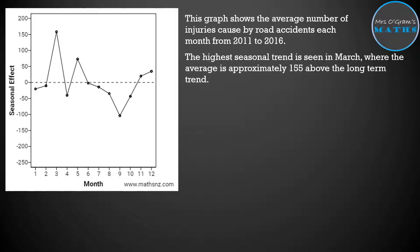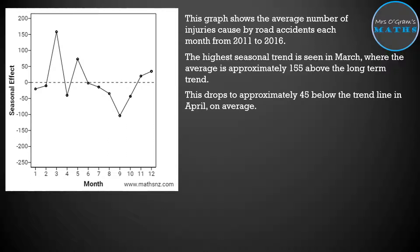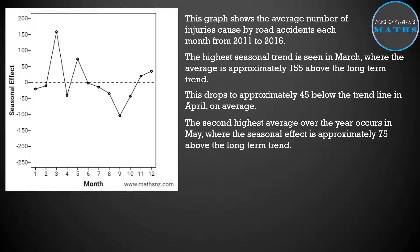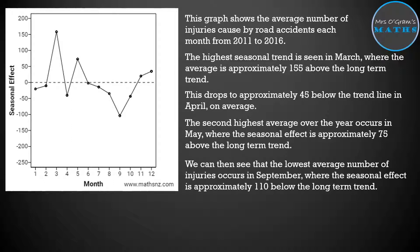Then you want to comment on some particular aspects you've noticed. The highest seasonal trend is seen in March each year, where the average is approximately 155 above the long-term trend line. This drops to approximately 45 below the trend line in April on average. Remember, we're always talking about averages — the average seasonal effect. It might not be that every single year had that exact same pattern; some years would have varied a little. The second highest average over the year was in May, where the seasonal effect is approximately 75 above the long-term trend line. The lowest average number of injuries occurs in September, where the seasonal effect is approximately 110 below the long-term trend line.